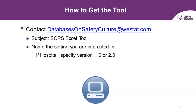How can I obtain the tool? You can obtain all of the SOPS data entry and analysis tools by contacting our help desk at databasesonsafetycultureatwestat.com. Please be sure to specify in the subject line 'SOPS Excel tool' as well as which tool you're interested in. If it is for the SOPS hospital survey, please specify the survey version, such as Hospital Excel tool 1.0 or Hospital Excel tool 2.0.